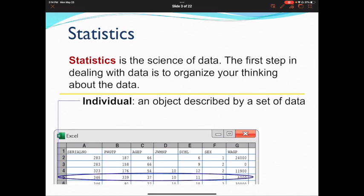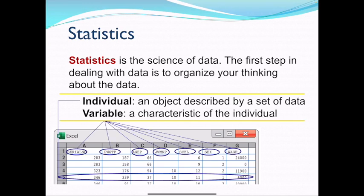So an individual is an object described by a set of data. So I am an individual, and I can be described by a set of data, right? Like I am 32. I live in a specific zip code. I have brown hair. I have blue eyes. I'm five foot five.